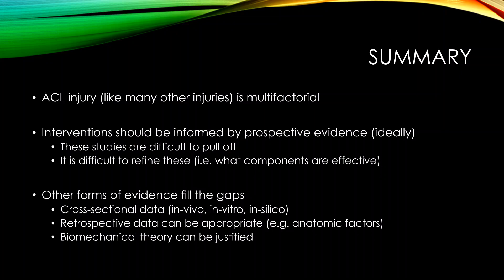Hopefully you understand how we can use other forms of evidence - non-prospective evidence - to fill the gaps. There's quite a bit of cross-sectional data, as well as in vivo, in vitro, and in silico evidence. Remember: in vivo means within a living breathing human, in vitro within a cadaver, and in silico means simulation. Some retrospective data can also be appropriate for establishing anatomical factors as a risk factor. Biomechanical theory can also be justified because prospective studies are so difficult to pull off - as long as there are conceivable benefits and no conceivable harm, this can be well justified, but your justification needs to be very clear and well explained.